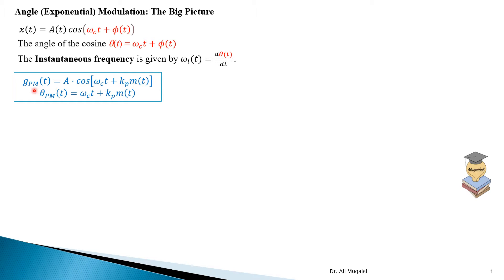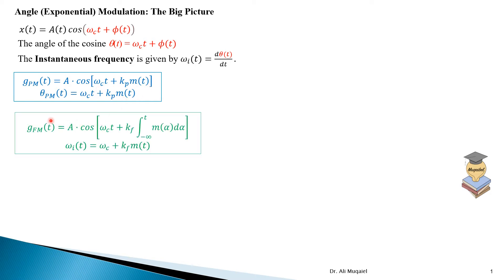The following expression shows the general form for the phase modulated signal. The message is proportional with the phase of the signal. You can find from here the phase, which is the argument of the cosine. Similarly, we can write the general form for FM. Since the frequency is related to the derivative, we need to start here with the integral. It's a very similar expression except that we have K sub F and then the integral of the message.